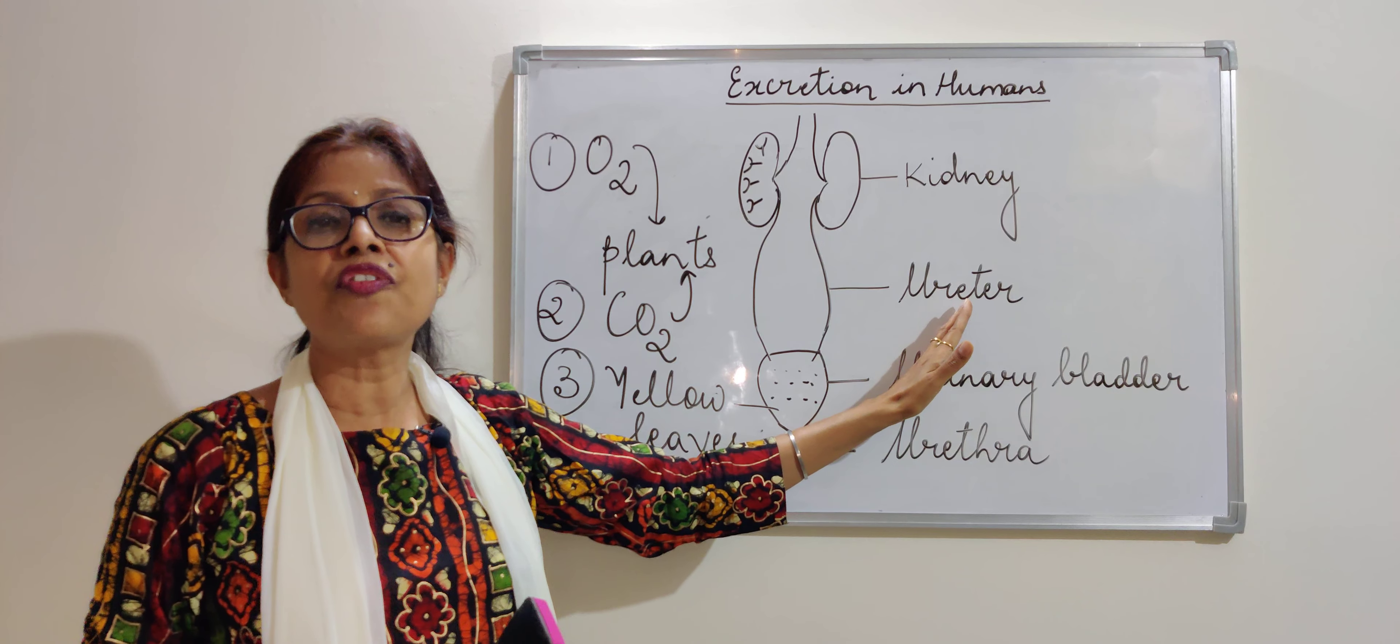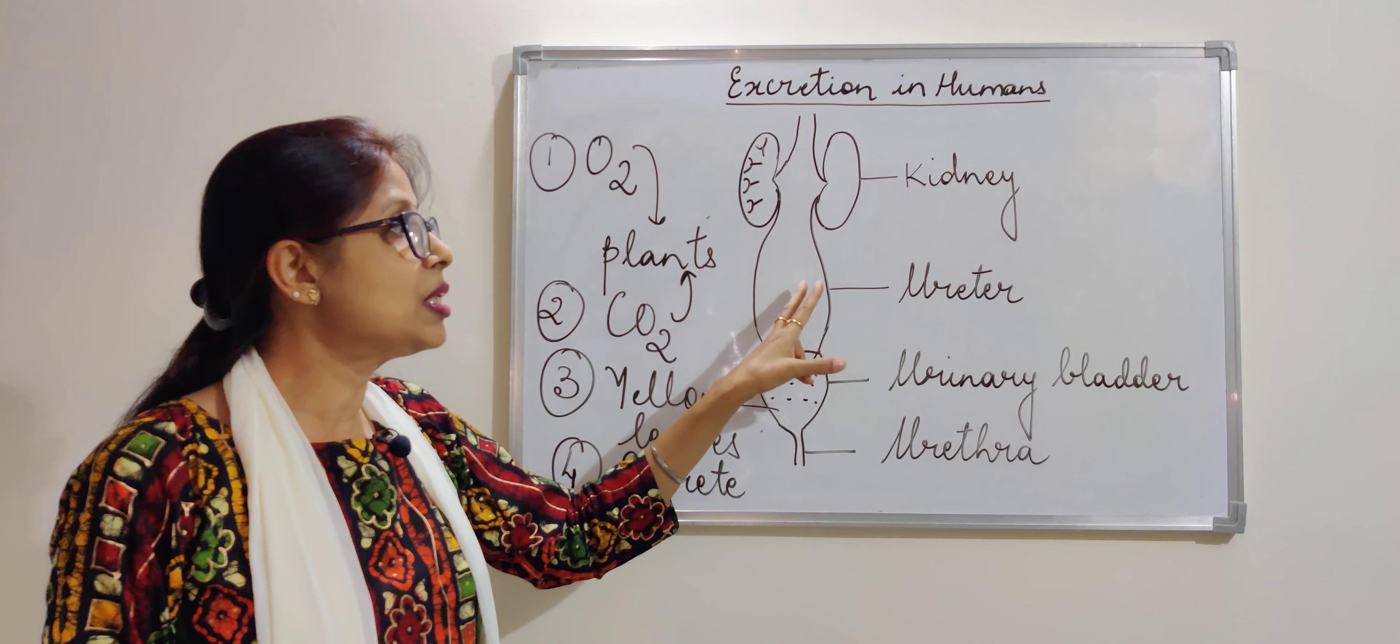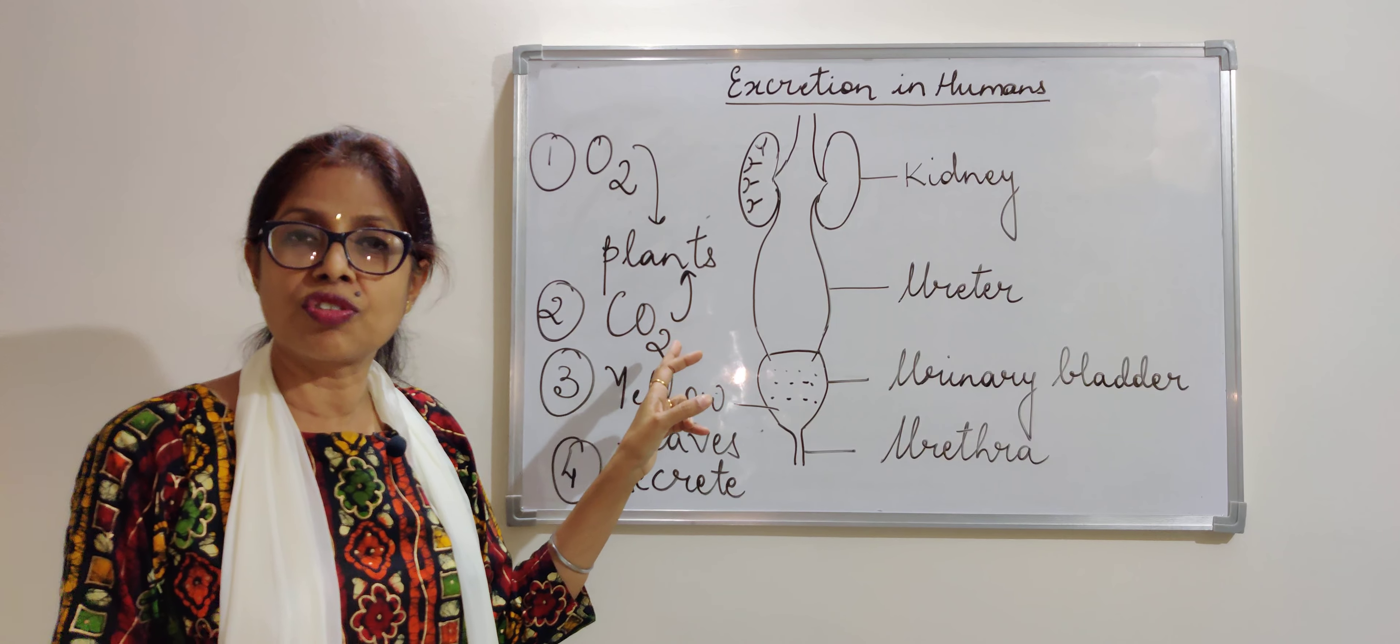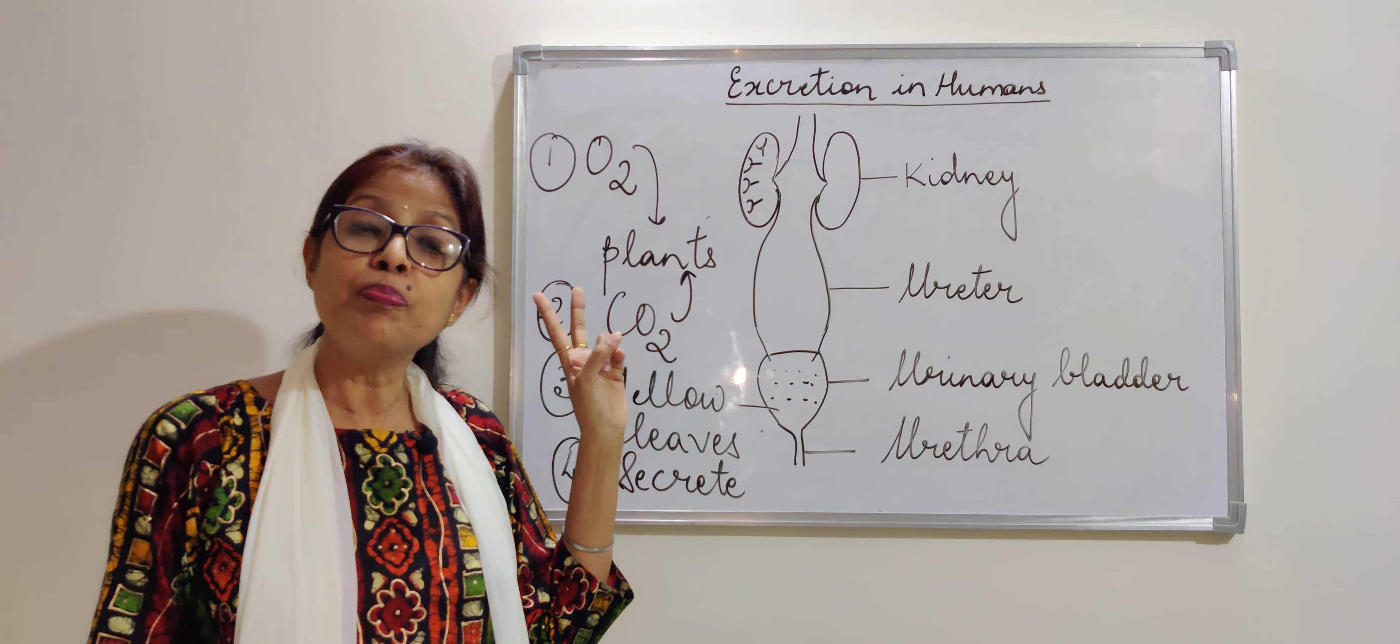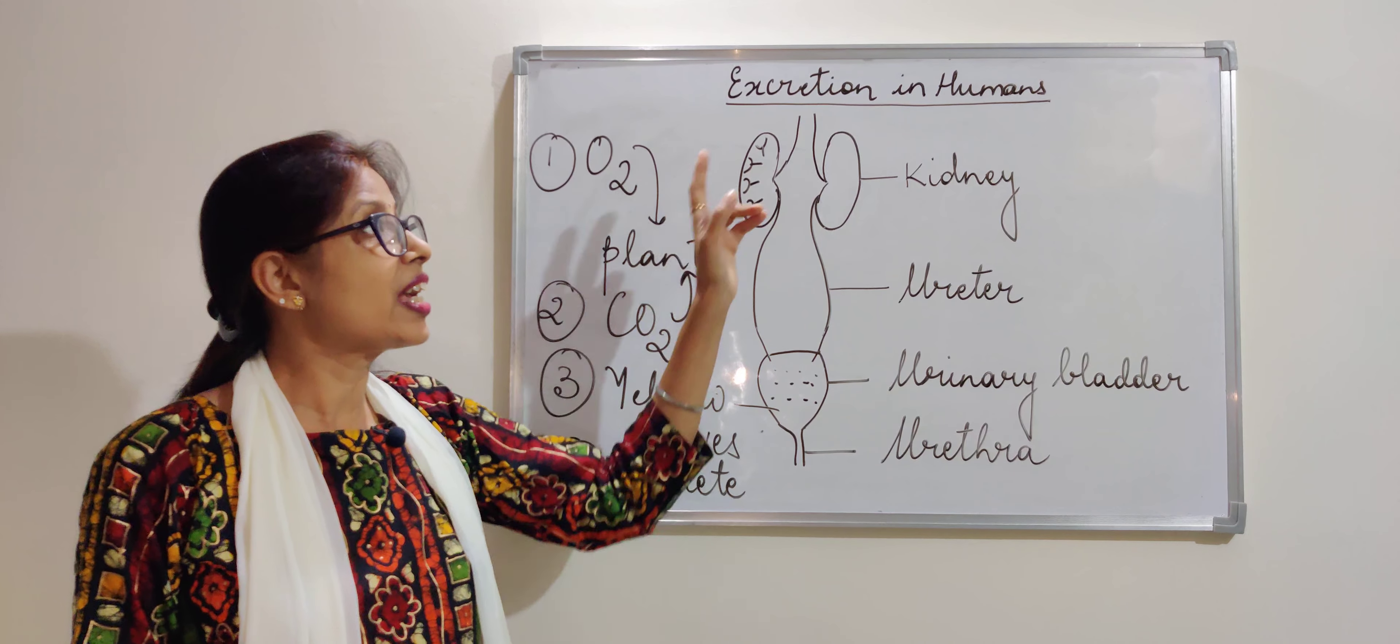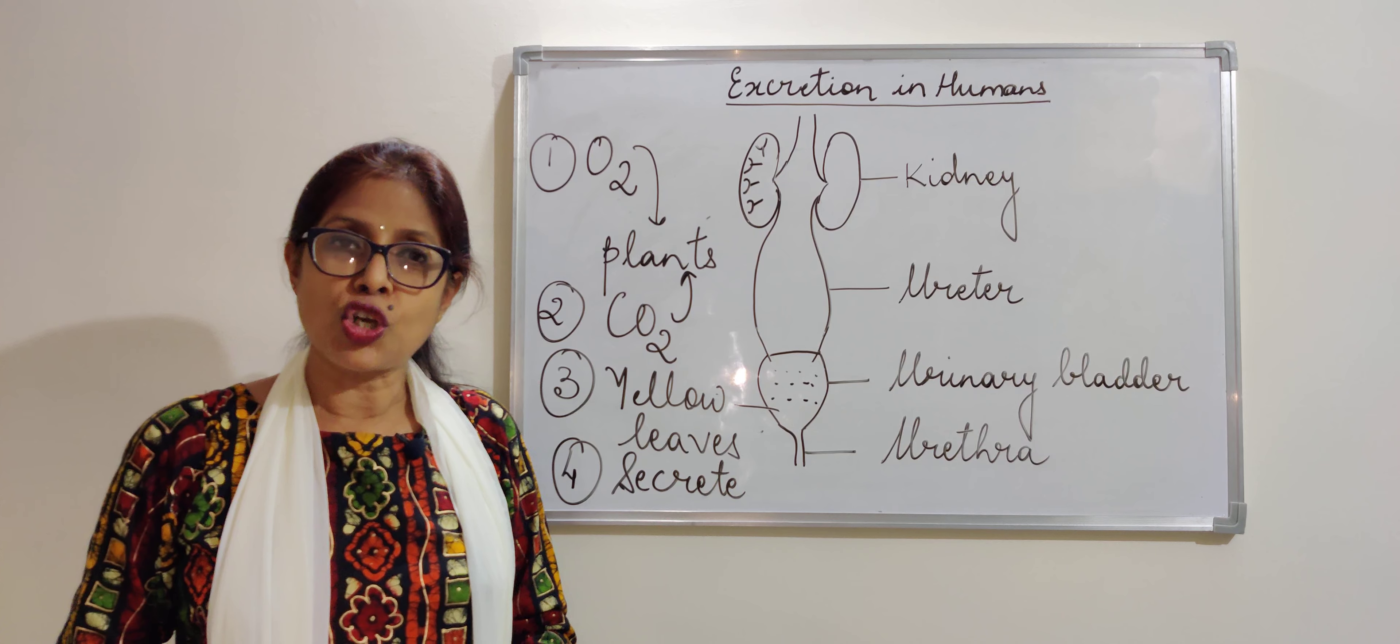So there is a vast difference between humans and plants or animals and plants. The reason is, animals have a proper excretory organ, whereas plants do not have an excretory organ. Whether they have or whether they do not have, in both cases, the waste has to be thrown out. So the way is different, but excretion has to take place, because if there is no excretion, the body will become toxic.